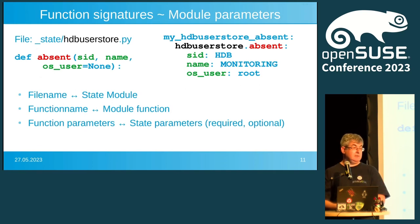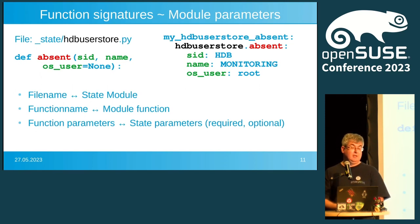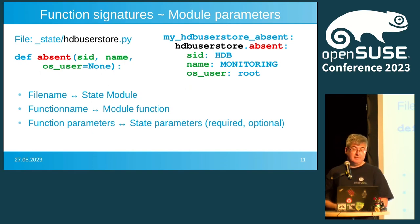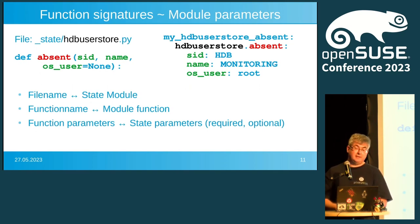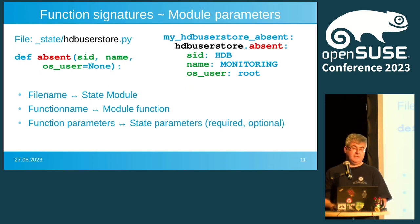The function signatures are approximately the same as the module parameters — as we saw with execution modules. In our example we use the file hdbuserstore and the function is, for example, 'absent'. The state call on the right-hand side is what you write in a Salt state. The black part is the file or module name from the state module, the function name in red is used to call the function, and the parameters are the same on both sides — so it's pretty simple once you understand how that works.